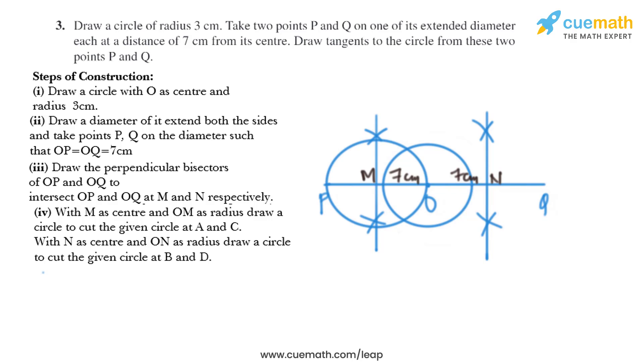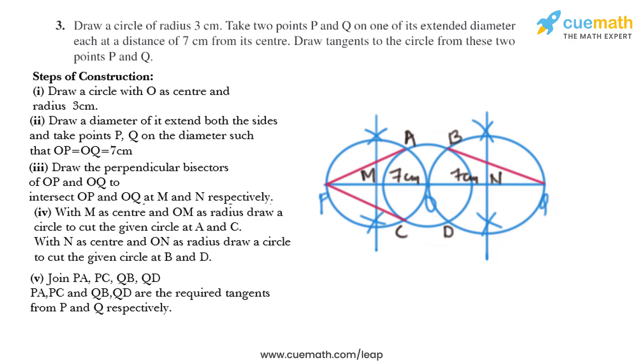And we'll mark the points of intersection as A and C, and B and D. Now in the next step, we just need to join PA, PC, QB, and QD. So we'll draw lines to join them like this. So PA, PC, QB, and QD are the required tangents from P and Q respectively.